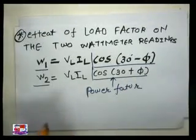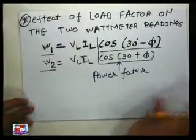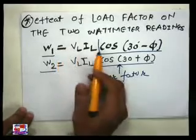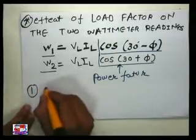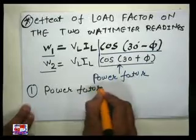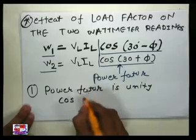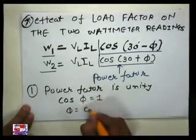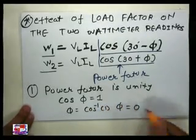Both W1 and W2 meter readings will depend on the power factor. Today's session will be the effect of the power factor on the 2 wattmeter reading. We have to derive the different cases. First case: power factor is unity. Unity means cos φ = 1, so φ = cos⁻¹(1), therefore φ = 0.